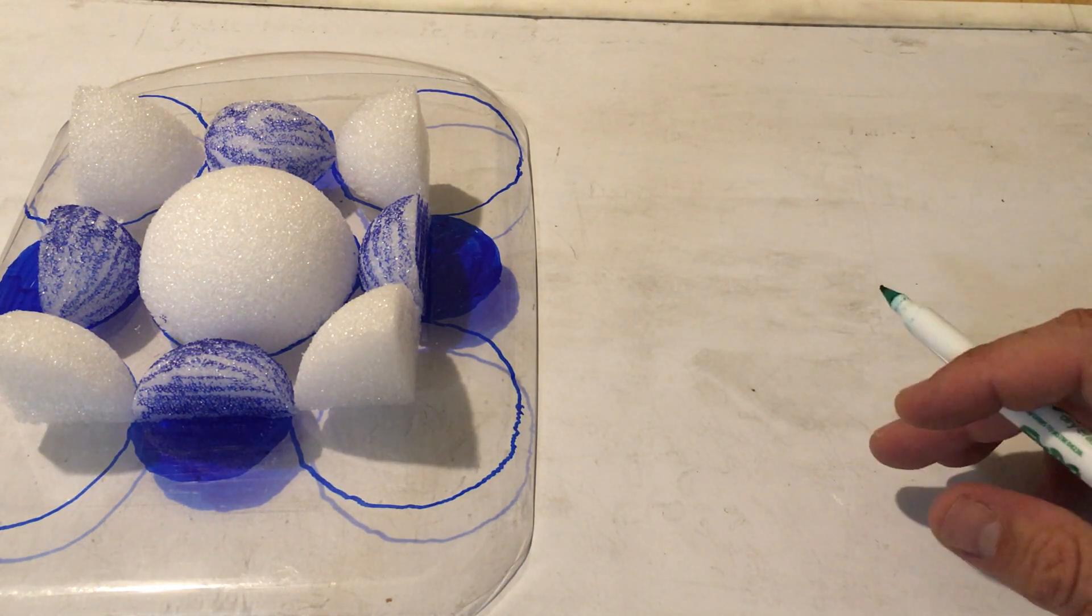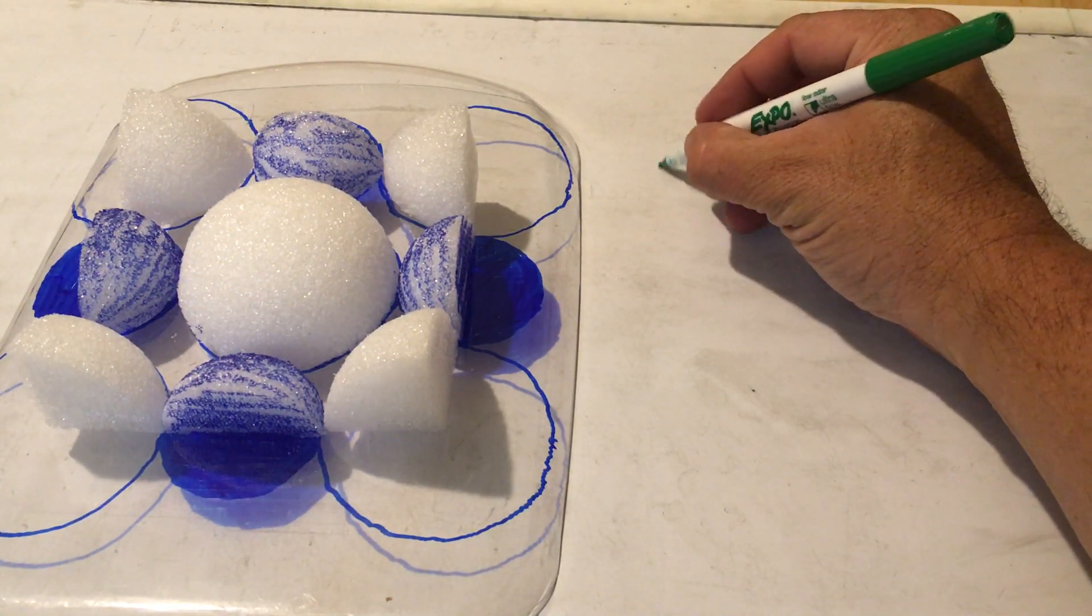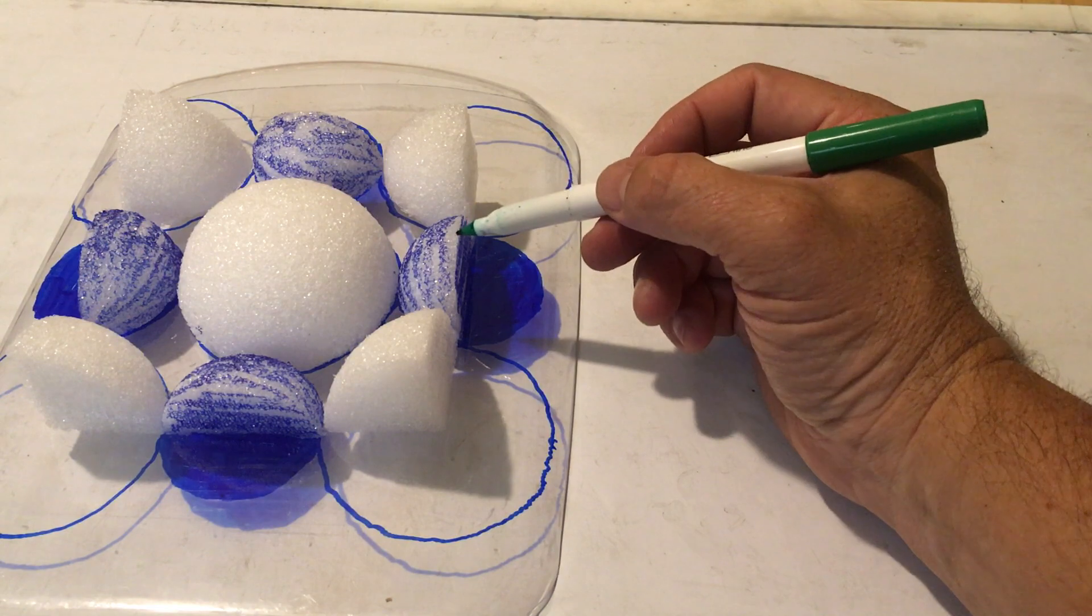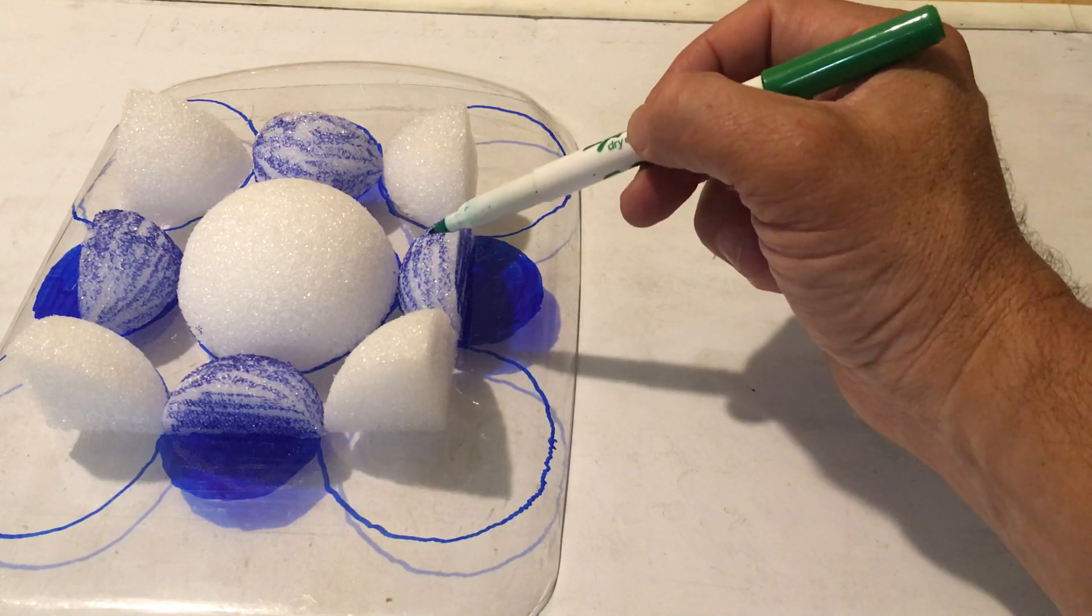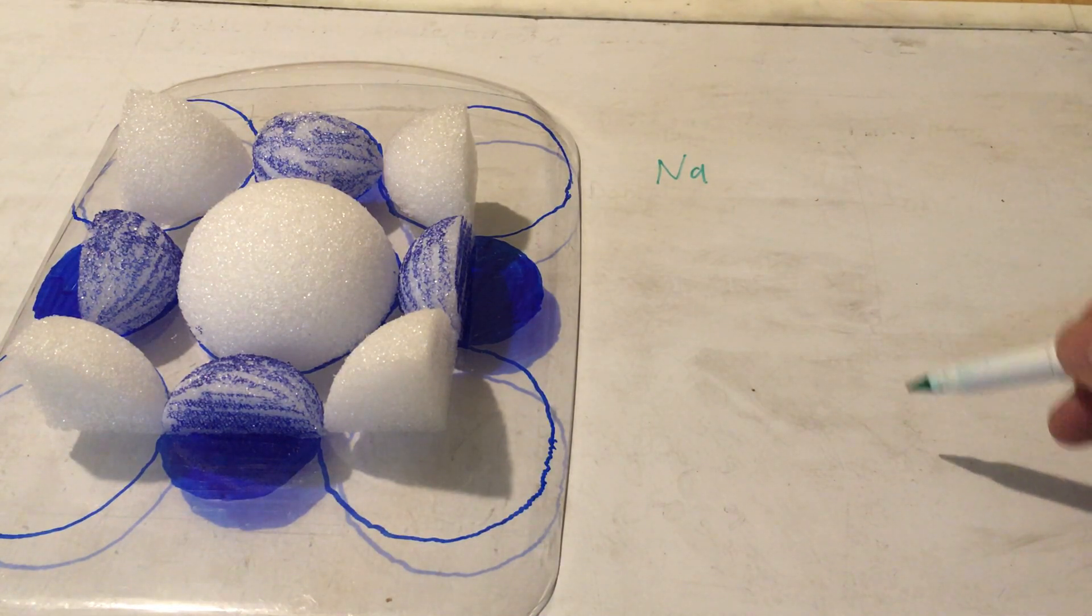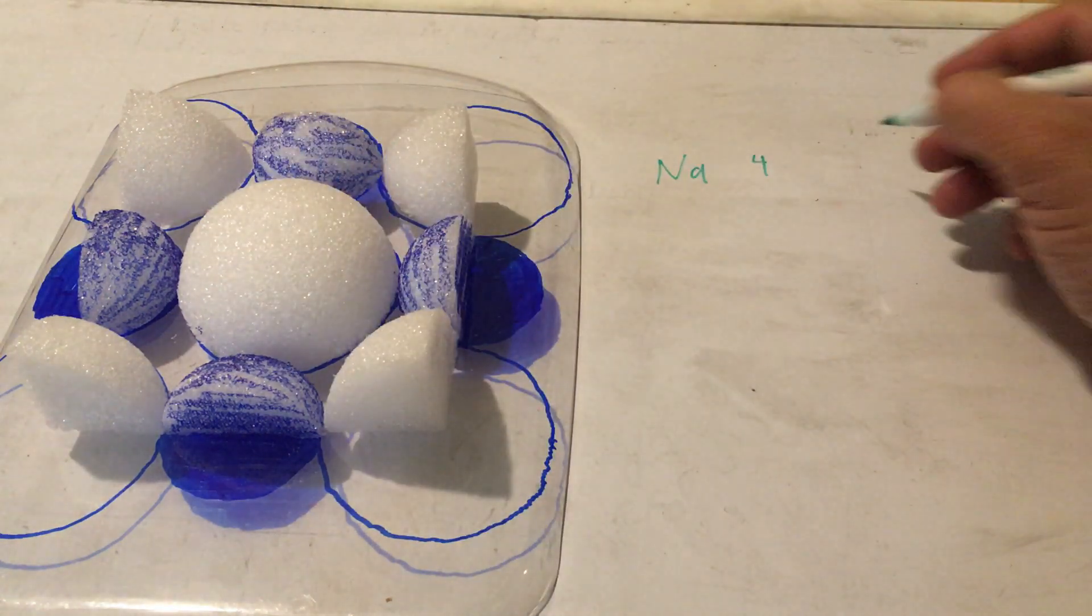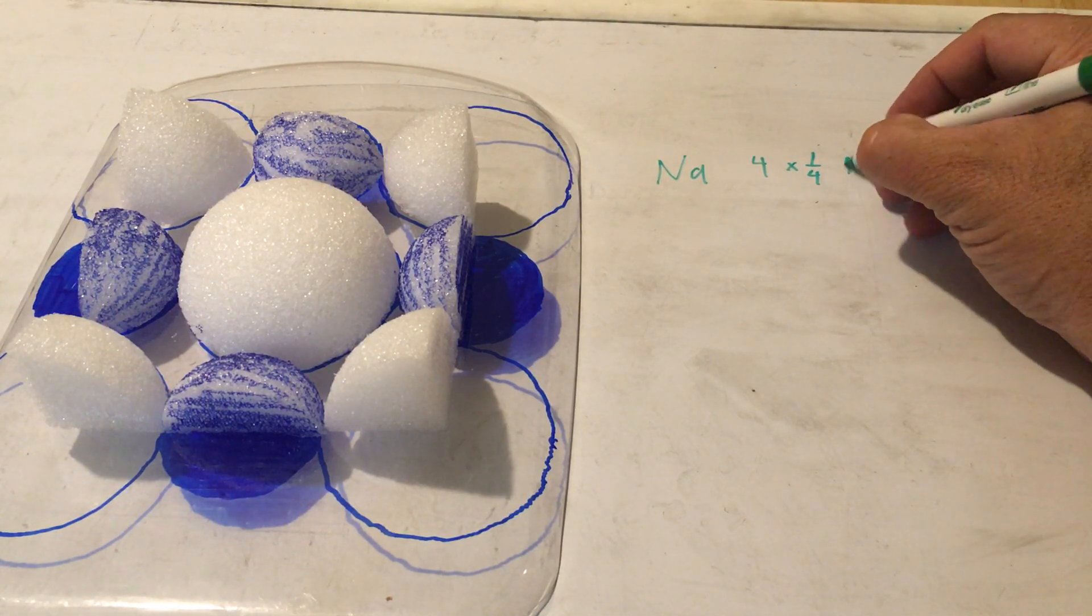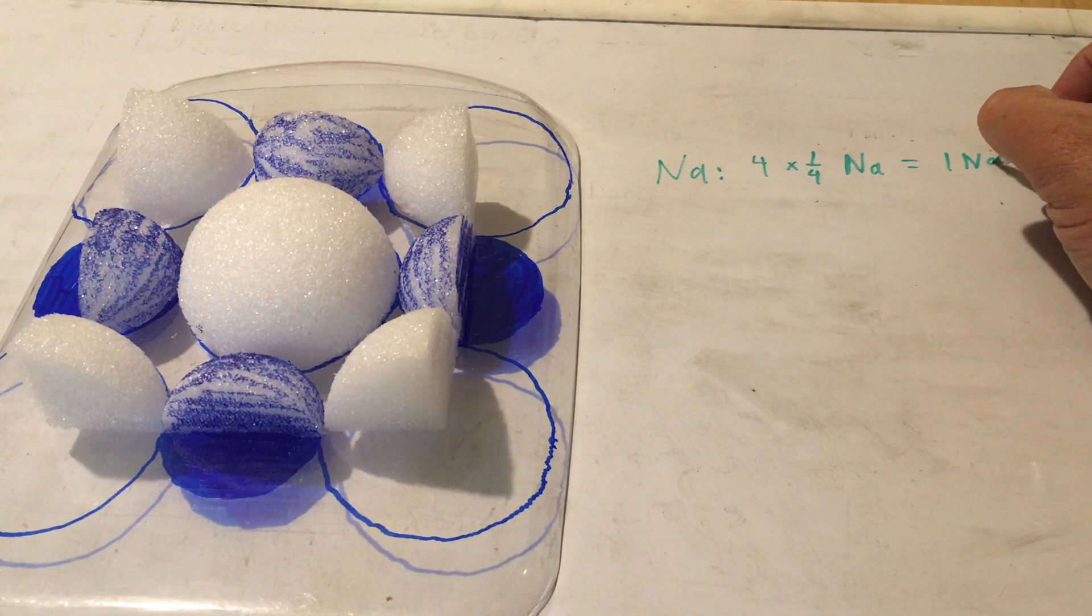And what do we have here? Well, we have, with respect to sodium, we have these cations along the edges of the cube, and so only a quarter of these ions are within the unit cell. So in this layer, we have four times one quarter of a sodium, and that gives us one sodium.